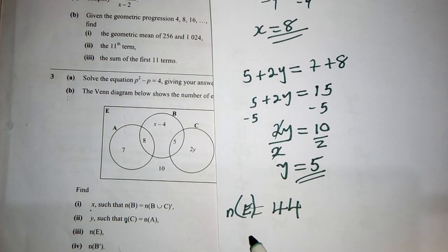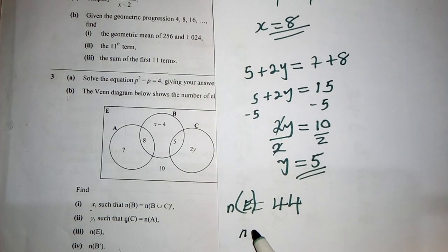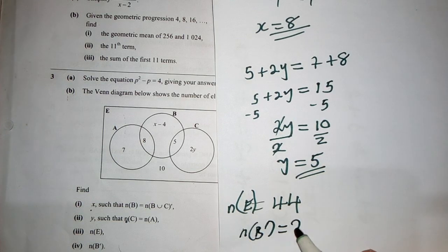So number of elements in B complement will be 27.